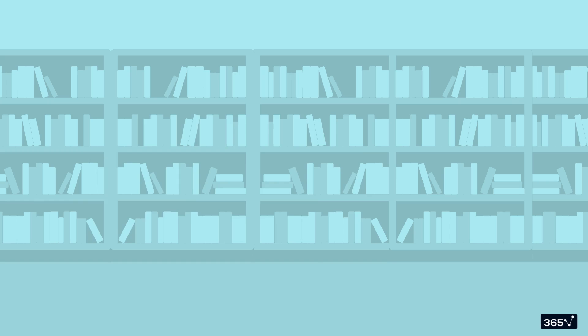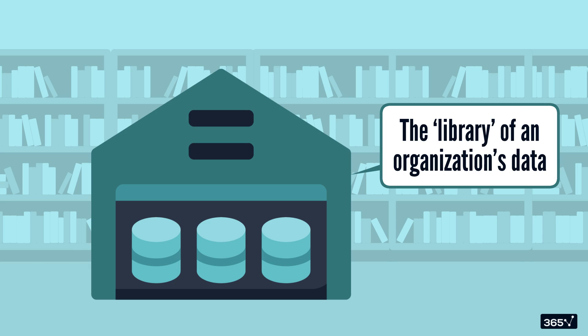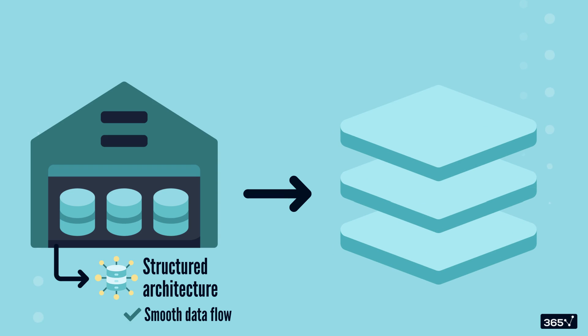A data warehouse functions similarly, acting as the library of an organization's data. Let's explore how its core components work together to organize and present data in meaningful ways. At the heart of every data warehouse lies a structured architecture designed to ensure smooth data flow.